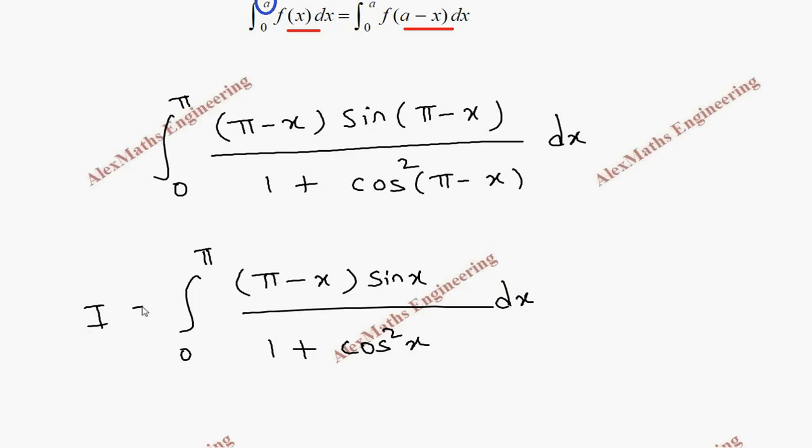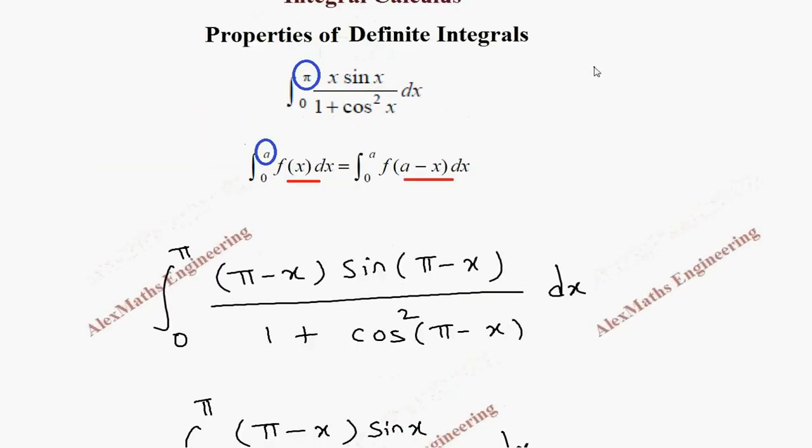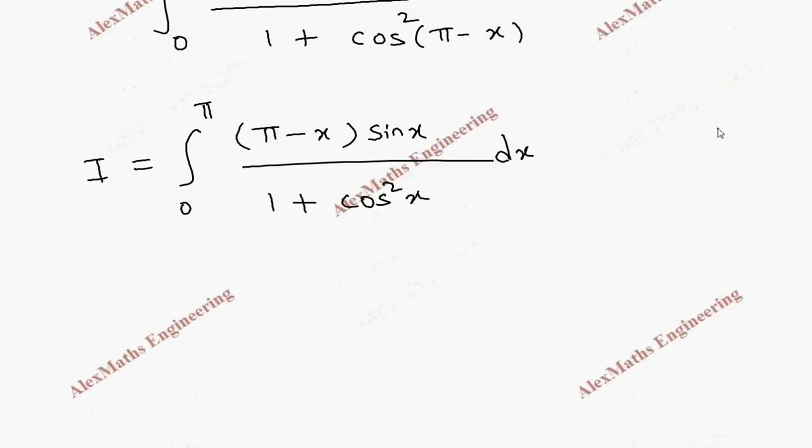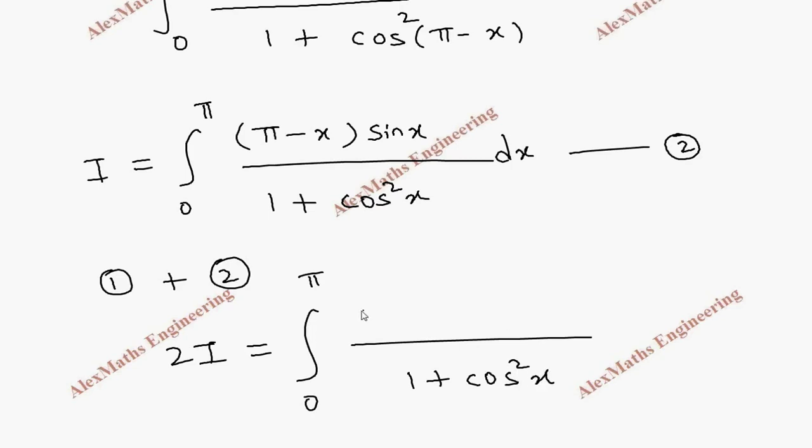Let's take this as i and even the question is i, and we name this as the first expression and this as the second expression. We are going to add both. So when we add both, we get 2i equal to integral 0 to π. In the second expression, we have both the denominators, 1 plus cos square x. And in the numerator...